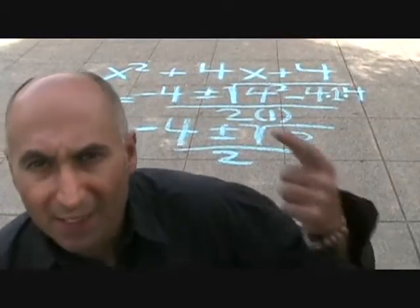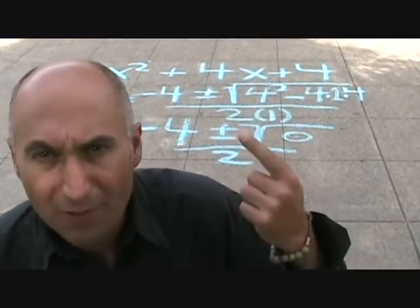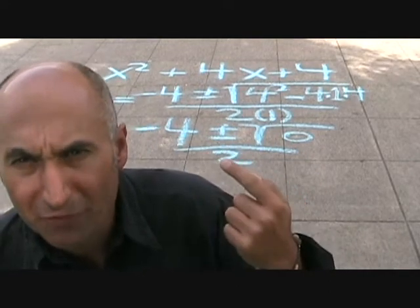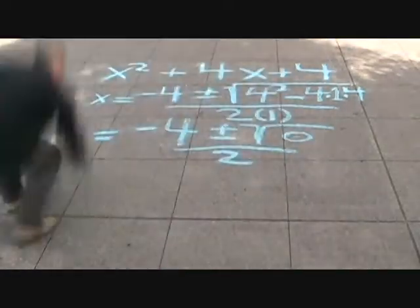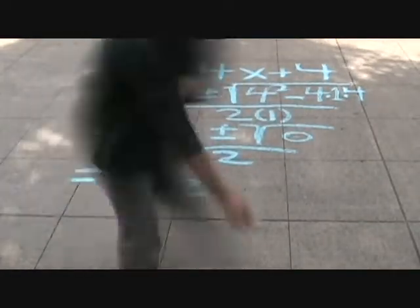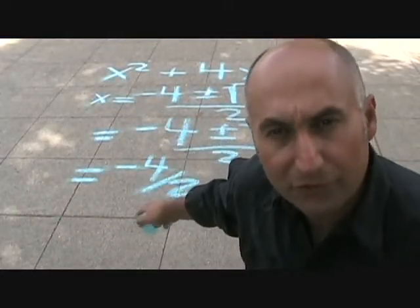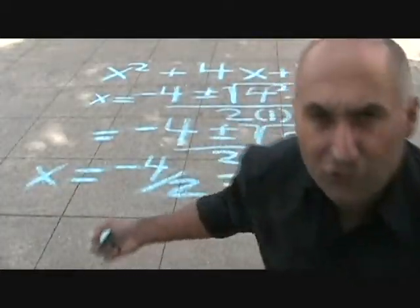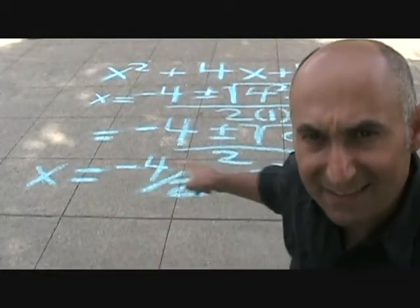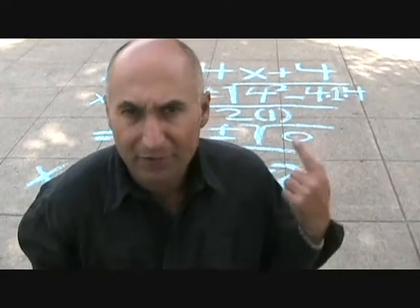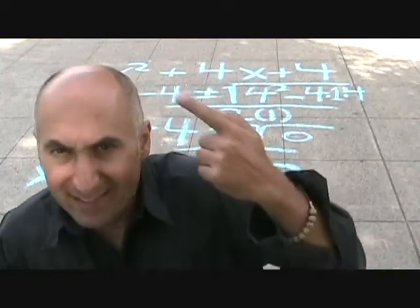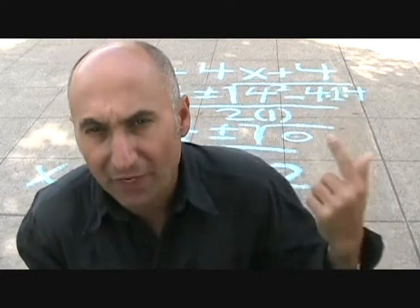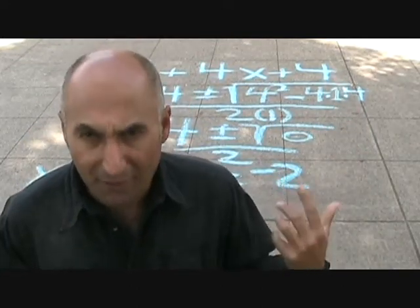So what we got is negative 4 plus or minus the square root of 0, divided by 2. That's just negative 4 divided by 2, which equals negative 2. So x is equal to negative 2. If this expression was set equal to 0, your final answer would be negative 2 and you're done.